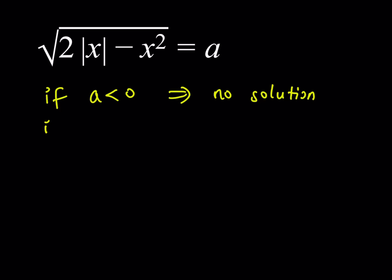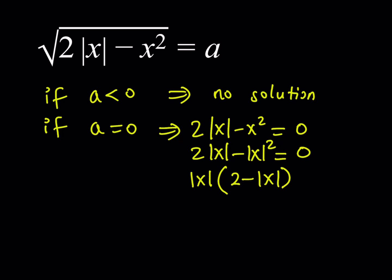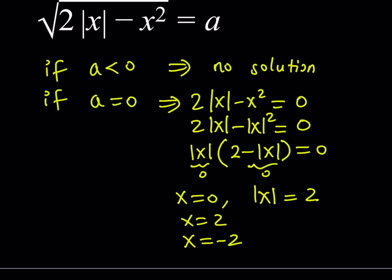What happens if a is equal to 0? If we replace a with 0, we get 2 times the absolute value of x minus x squared equals 0. We can rewrite x squared as the absolute value of x squared since x squared is non-negative, then factor out |x| to get |x| times (2 minus |x|) equals 0. This gives three solutions: x = 0, and |x| = 2, meaning x = 2 or x = -2.